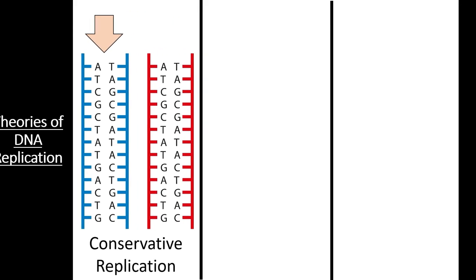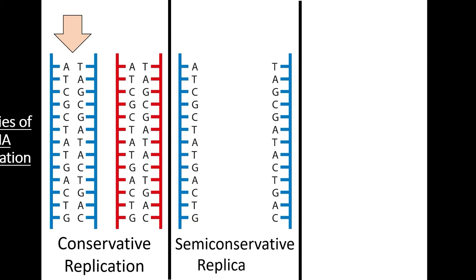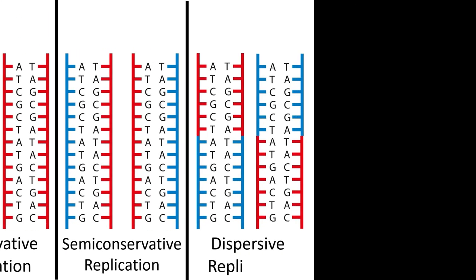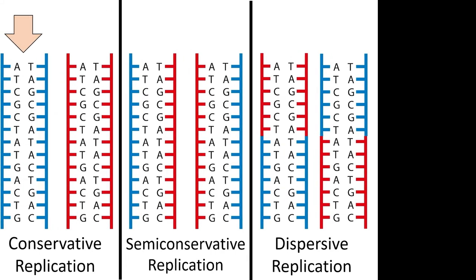The second theory, semi-conservative replication, postulates that the two original strands of DNA separate, and each of them serves as a template for a new strand, creating DNA molecules that have one original strand and one new strand. The third theory, dispersive replication, considered that in order for strands to not become twisted during replication, the original strand would need to be cut every 10 nucleosides or so, creating replicated molecules with segments of new double-stranded DNA and segments of the original double-stranded DNA.